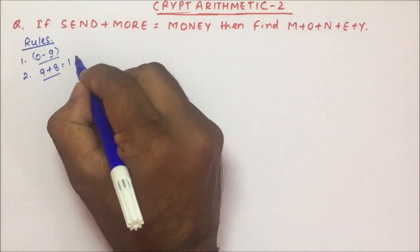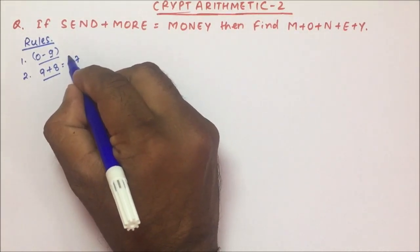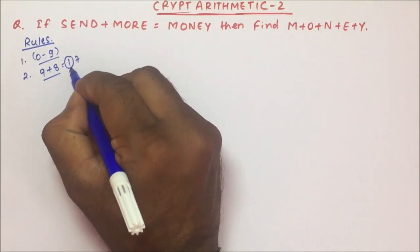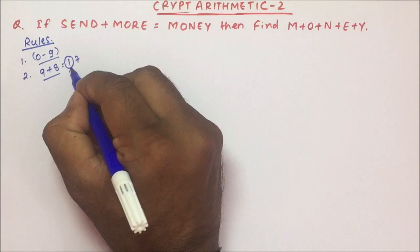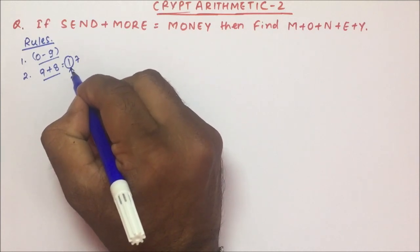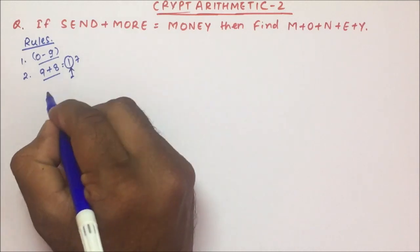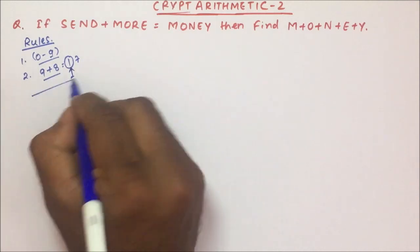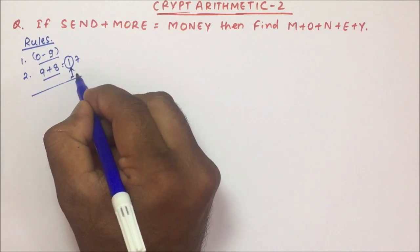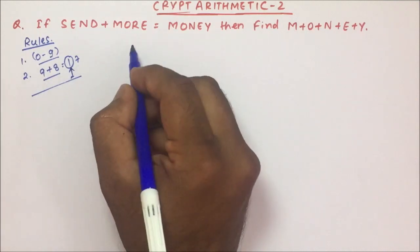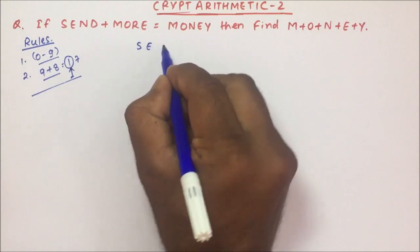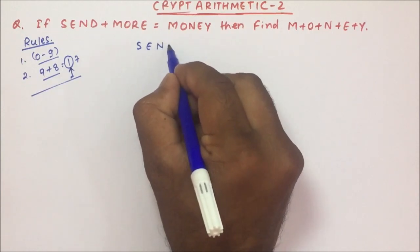If you are adding two digits, the maximum digit will be 9. So 9 plus 8 will be 17, and the maximum carry-over you will be getting is 1. Using these rules, we will try to solve this problem, and if any other rule is required I will mention it in the problem itself.